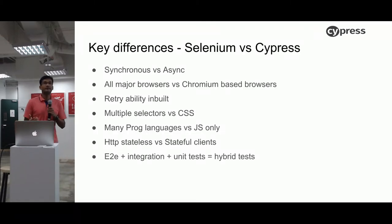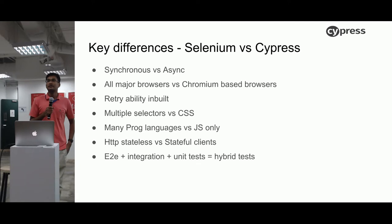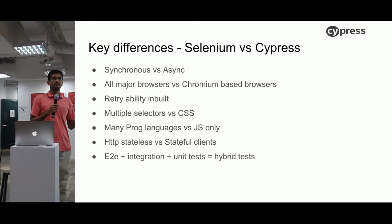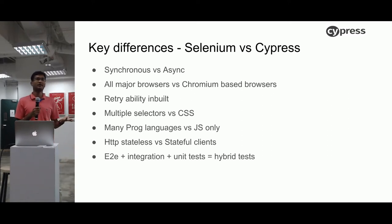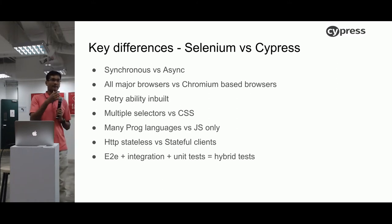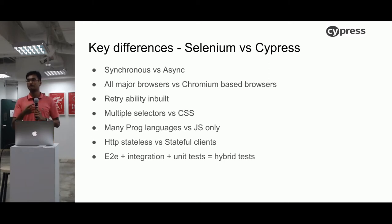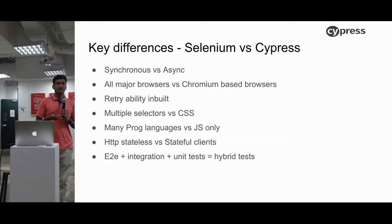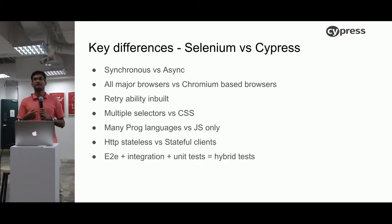The key difference is WebDriver is synchronous. There are four major layers in WebDriver: the client bindings where we write automation code, then the server which gets requests from the bindings, then the browser driver, and then the actual browser. Due to the REST API call between the client bindings and the server, every call is a synchronous call.